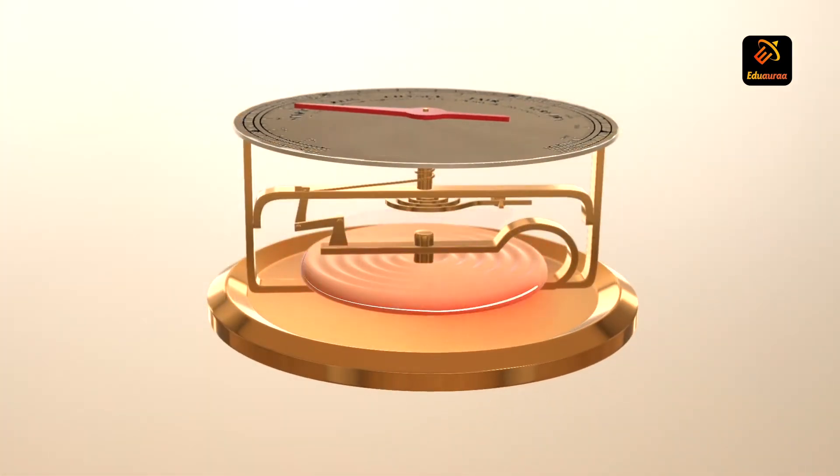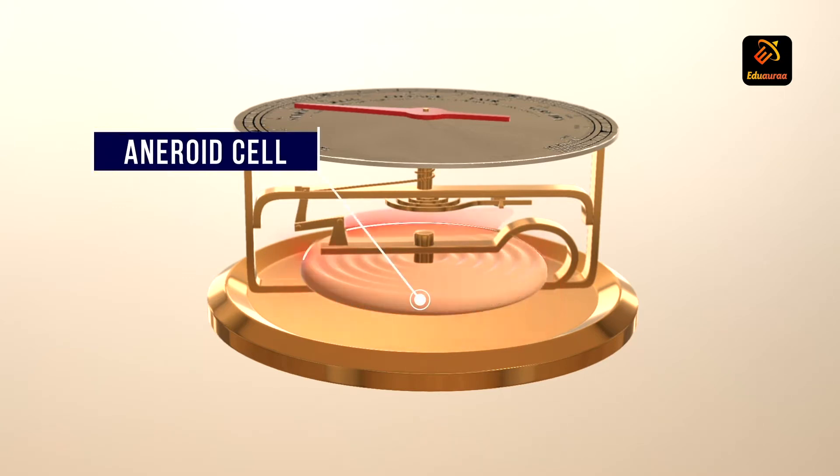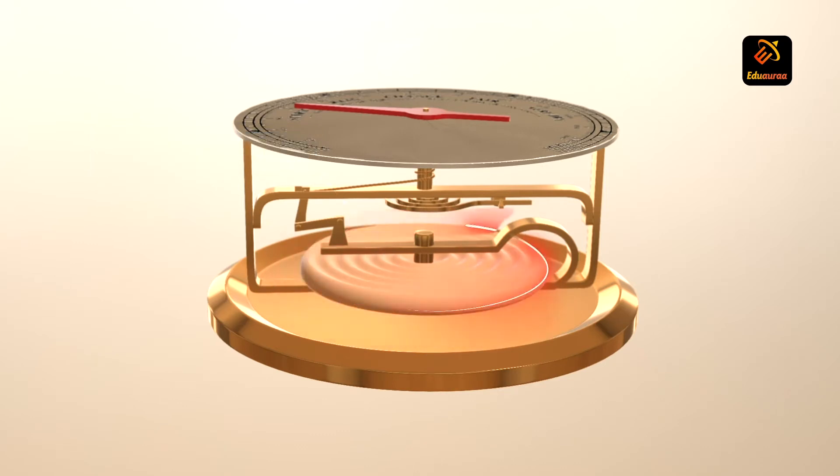Let us see what it consists of. It consists of a small metal box called an aneroid cell. The top surface of the metal box is made up of a metallic sheet.